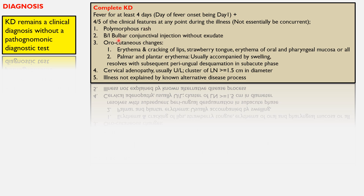The five clinical parameters are: polymorphous rash; bilateral conjunctival injection without exudate; cutaneous changes which can be erythema and cracking of lips, strawberry tongue, or erythema of oral and pharyngeal mucosa; palmar and plantar erythema usually accompanied by swelling, resolving with subsequent periungual desquamation in the subacute phase; and cervical adenopathy, usually unilateral, with a cluster of lymph nodes more than or equal to 1.5 centimeters in diameter.